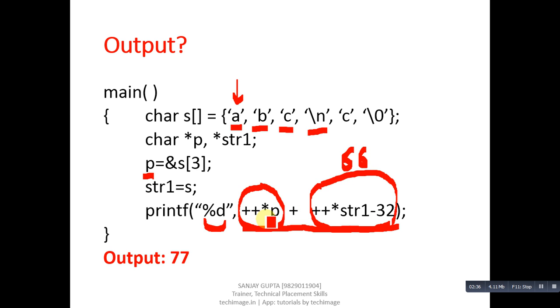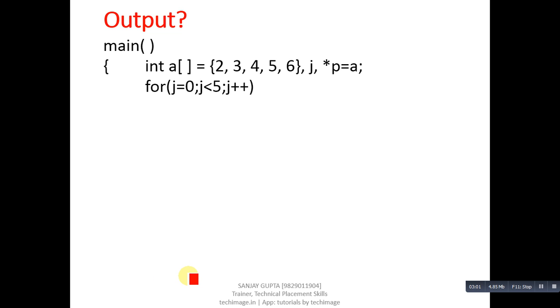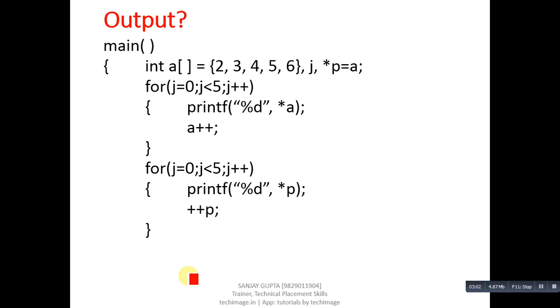Then plus plus will be performed, so 65 plus 1 is 66. This expression will provide 66. Now coming on to this part, plus plus asterisk p. p is containing address of s3, so s3 means this location slash n. Slash n's ASCII value is 10, so if we increase 10 by 1, it will become 11. Now you can add 11 and 66, output will be 77.